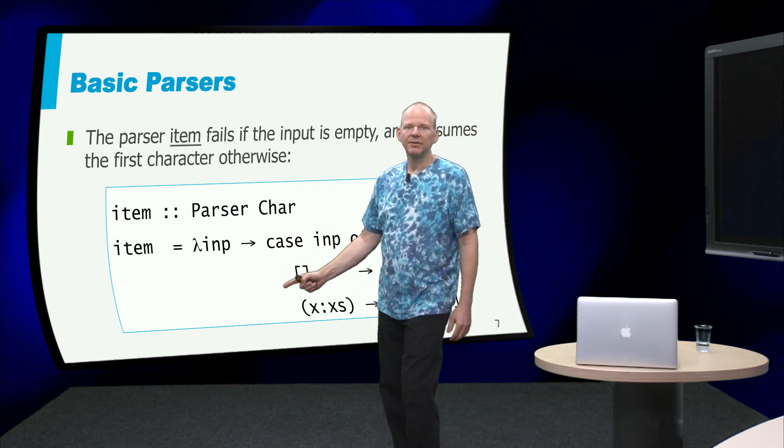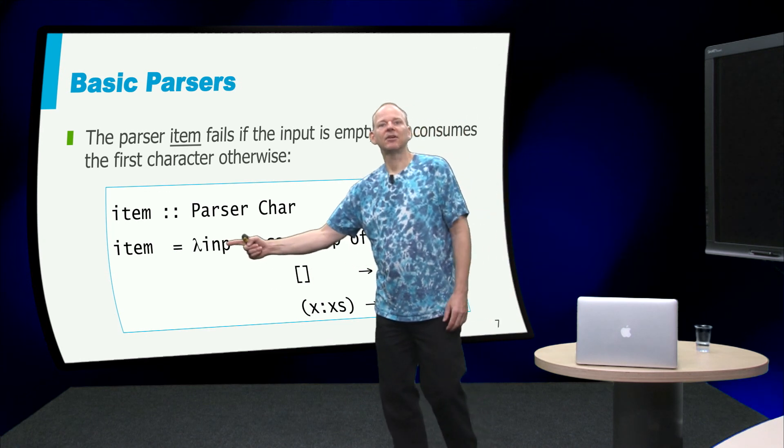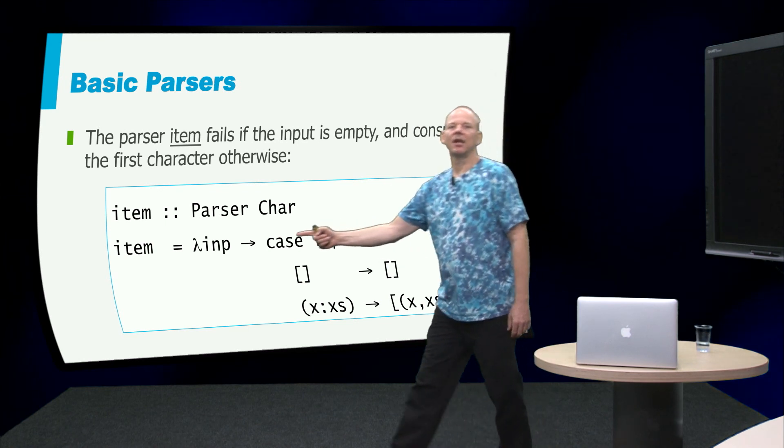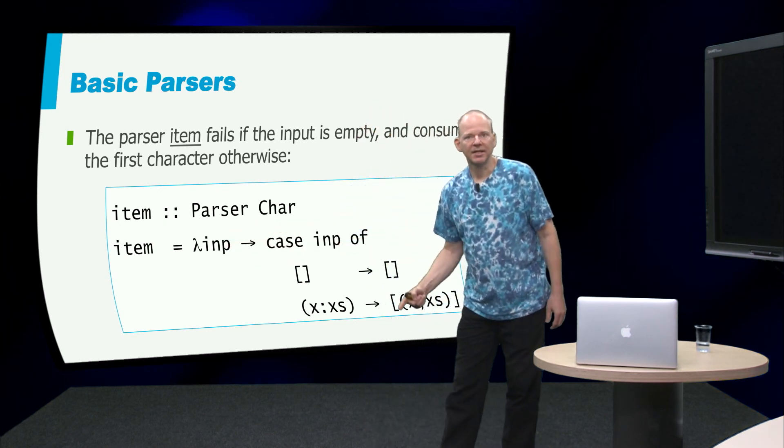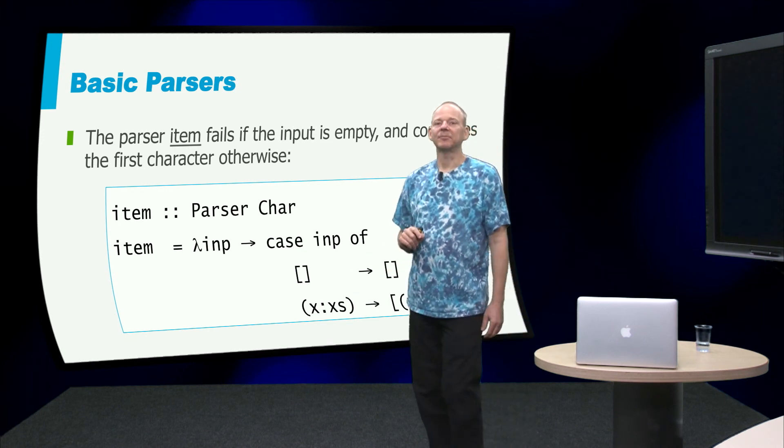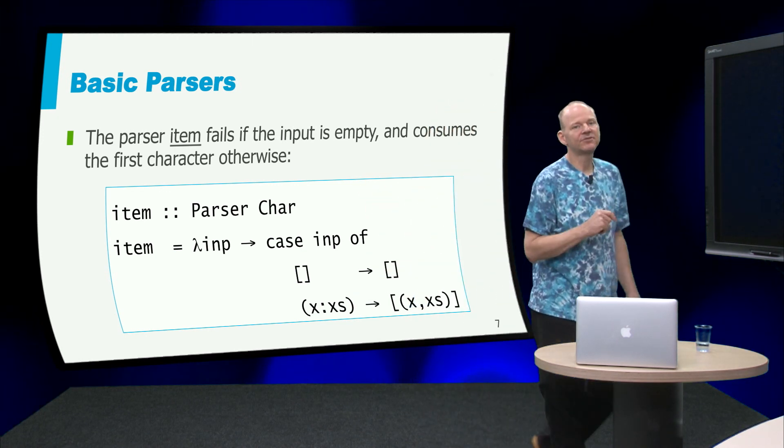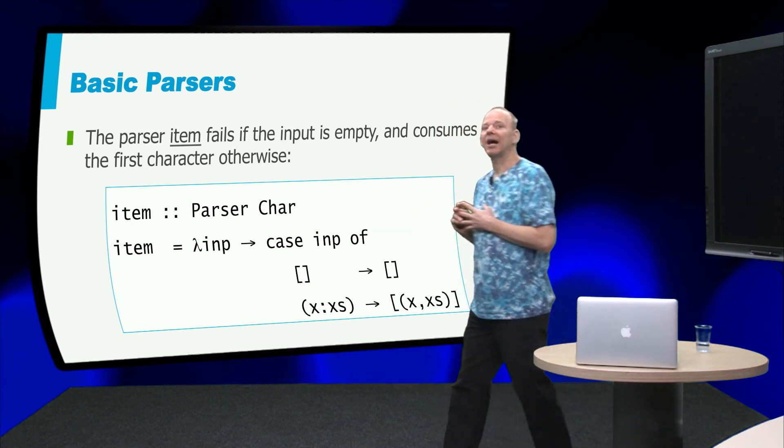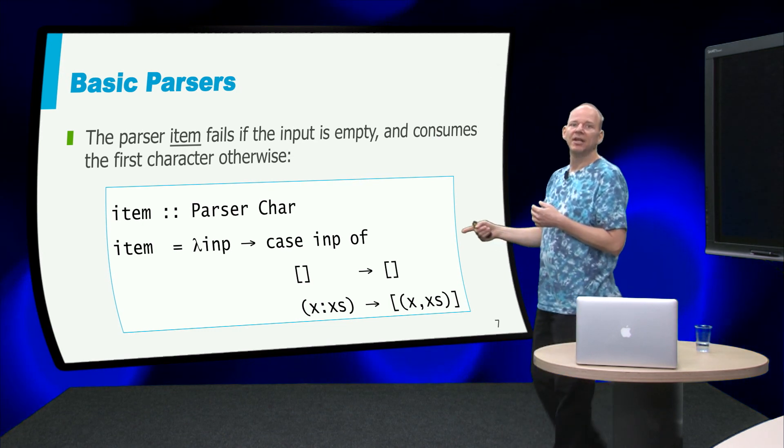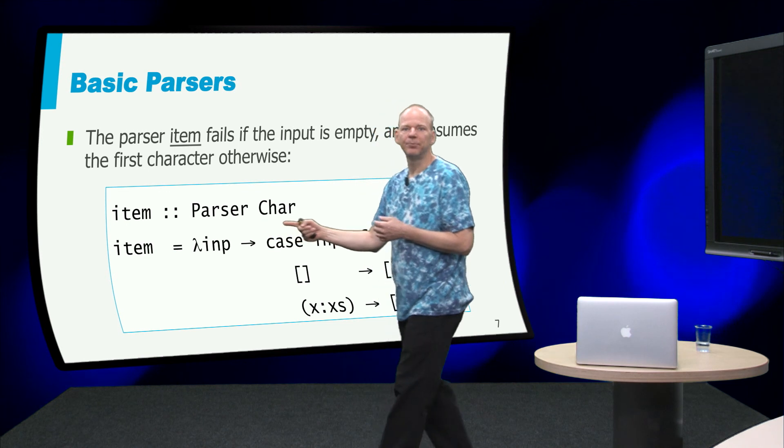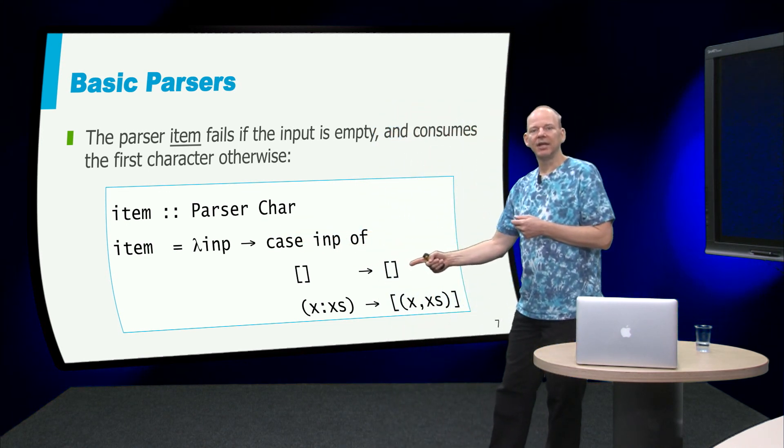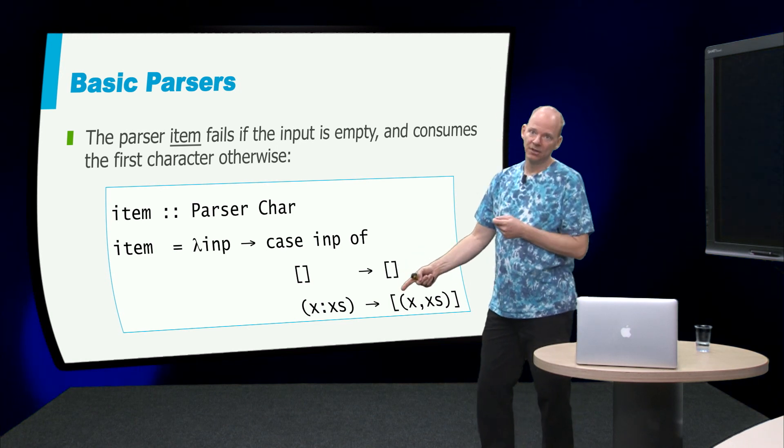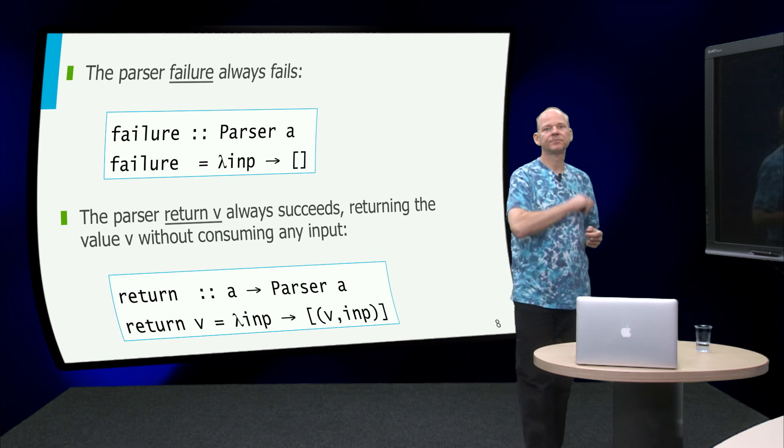Now notice here that we are not using kind of pattern matching on the left hand side, so we don't define item here using two clauses, but we are using a lambda expression with a case expression that has the pattern matching. So this is the first time that we have seen this syntactic construct in use. And also I must say I like this very much, because again it conveys that a parser is a function that takes the input and returns a list of pairs. And here you can also see that it really returns either an empty list or a singleton list.